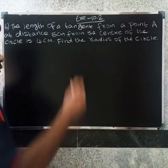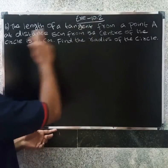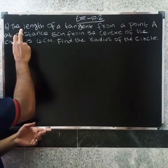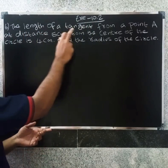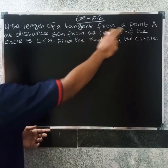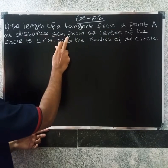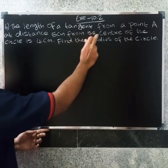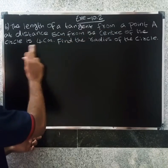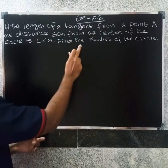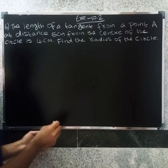Welcome friends. This is English 10.2, 6th question. The length of a tangent from a point A at a distance of 5 cm from the center of a circle is 4 cm. Find the radius of the circle.